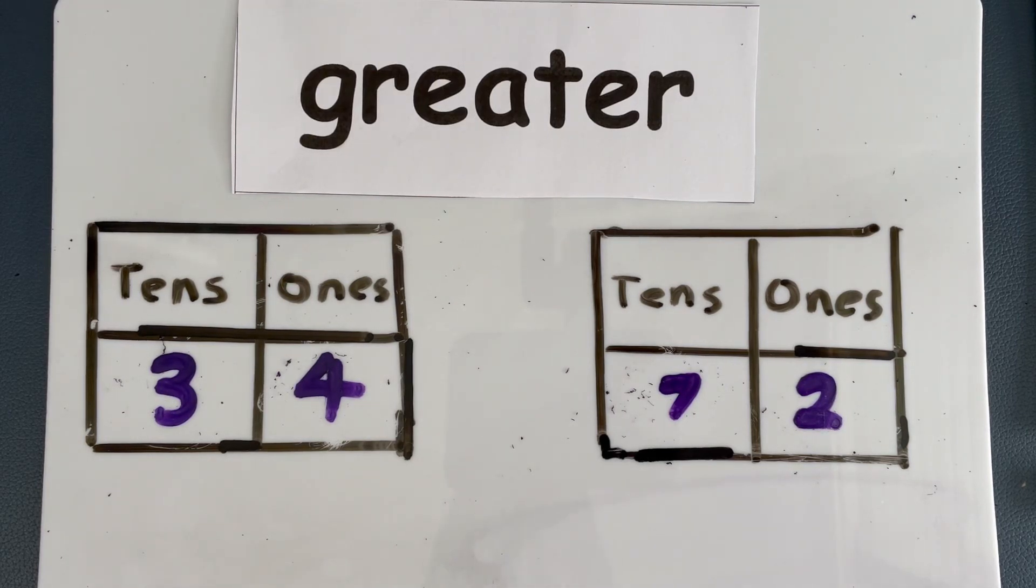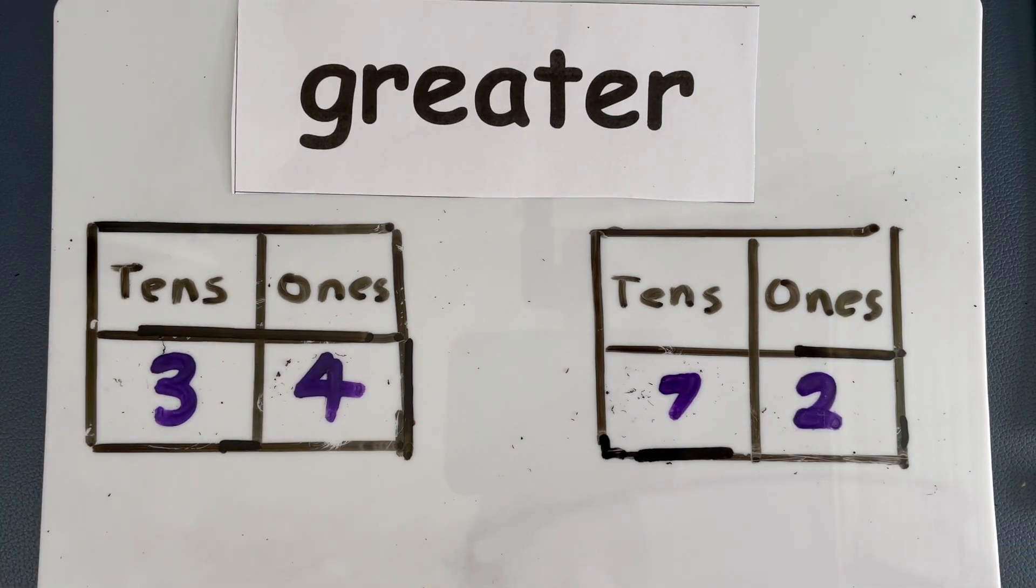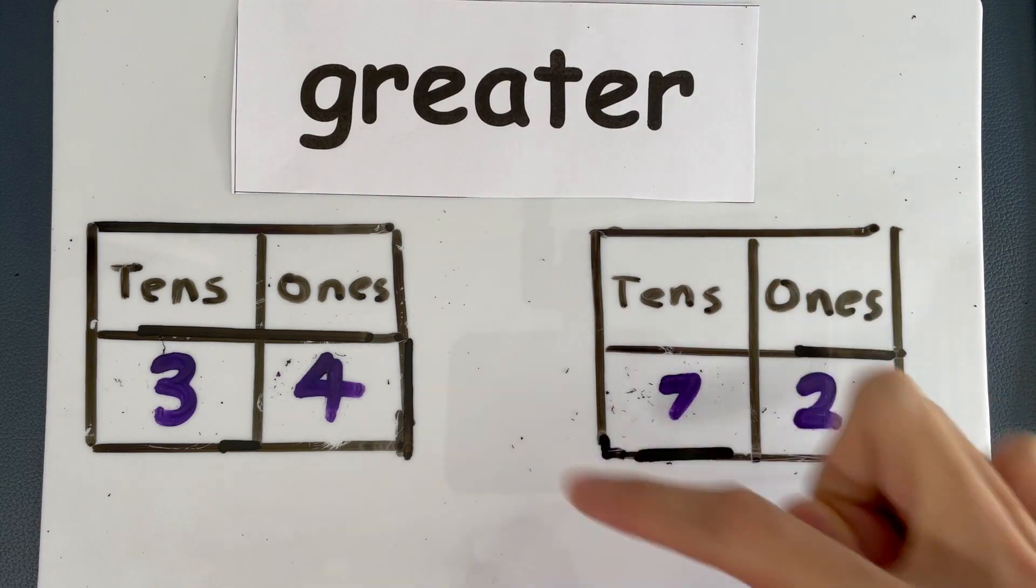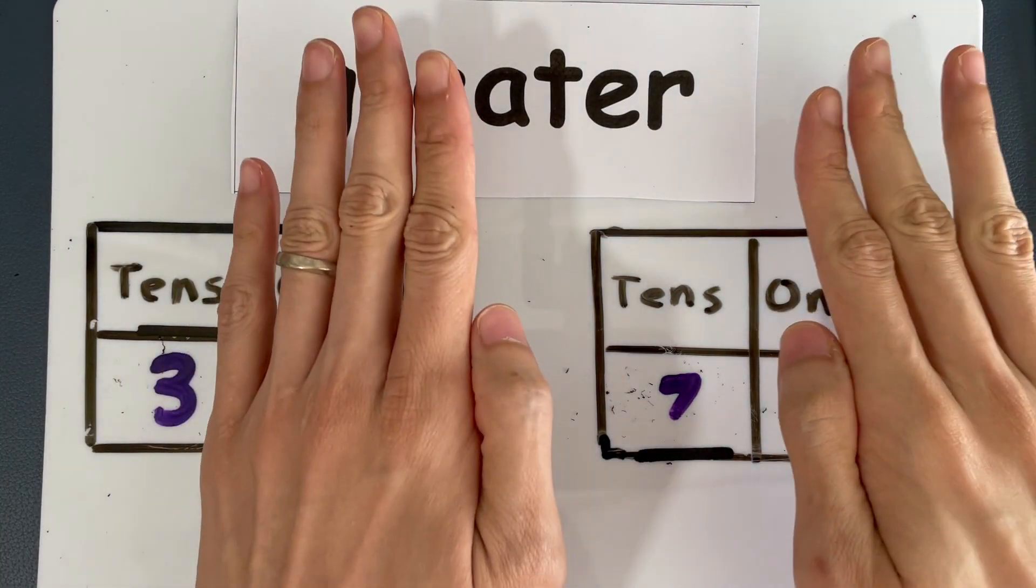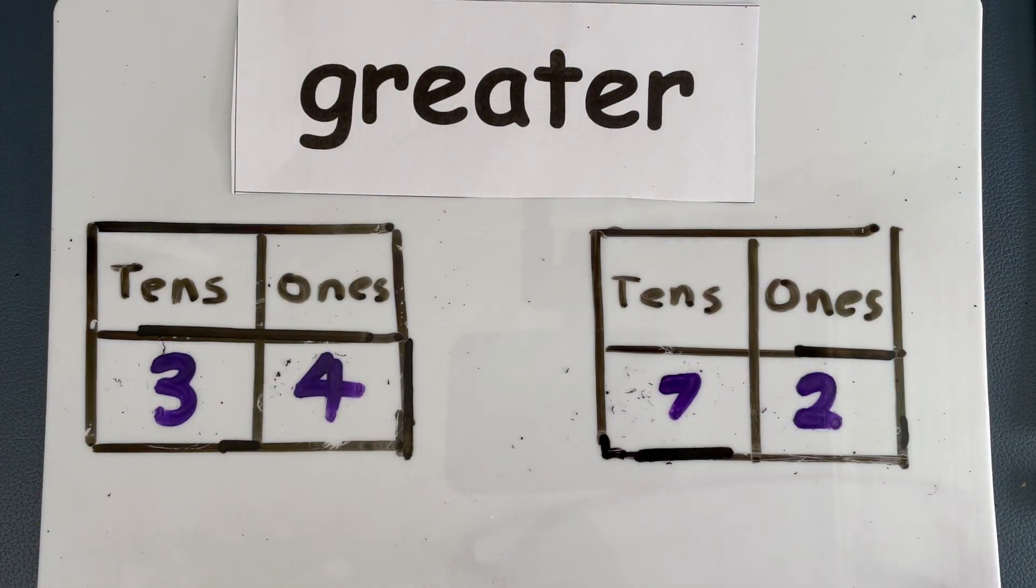All right. I have two new numbers for you, 34 and 72. I'm going to ask you which one is greater. Can you tell? Look at the tens. Which one is greater? Is it 3 or 7? 7, right? 7 is greater. So, 72 is the greater number. Okay? Because we are looking at the tens only. We are not looking at the ones. Look at the tens. As long as the tens is greater, that number will be greater. Okay?